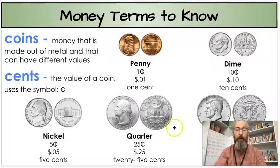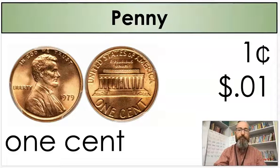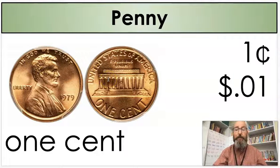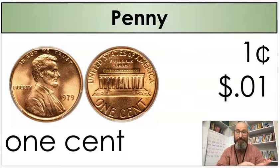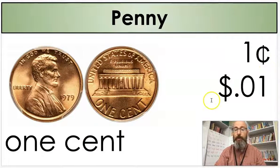Now, these are kind of small here, but we are going to go over all the different types of coins we might be using in our lessons. Our picture is going to show you the front and the back, so if you have one in your pocket you can look at your hand and say, I know what I have. The first one we have is a penny. A penny is worth one cent. You can write it as one cent with our cent symbol, or it can be written with a dollar sign and a decimal.